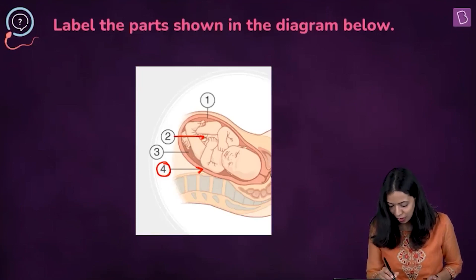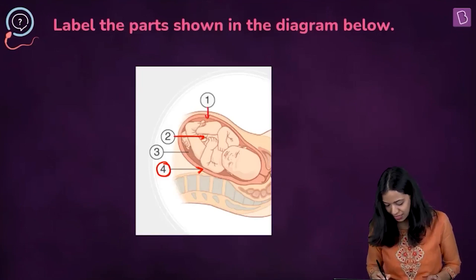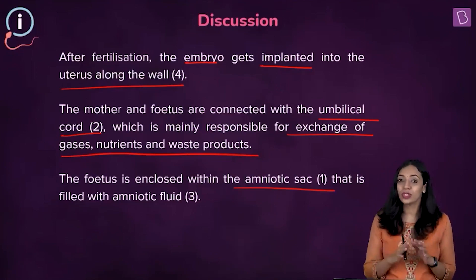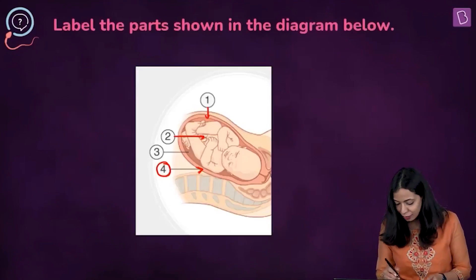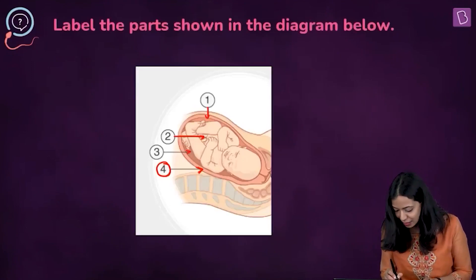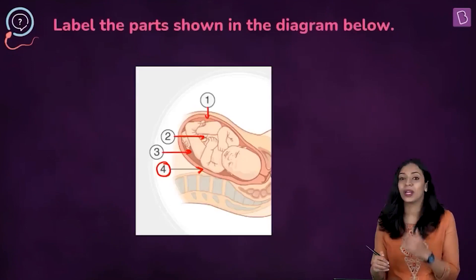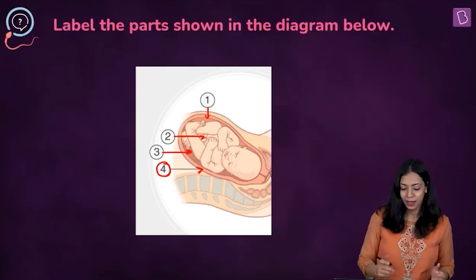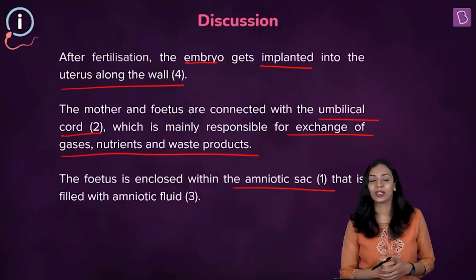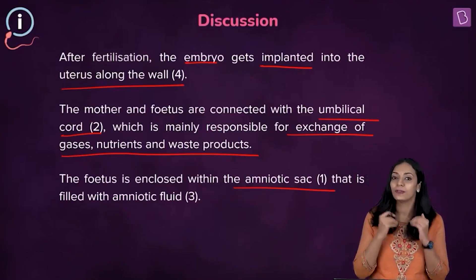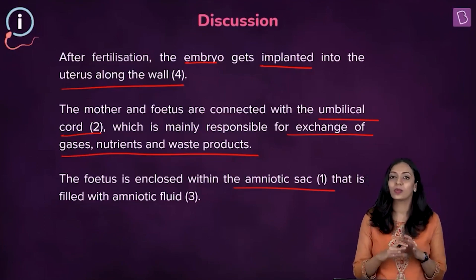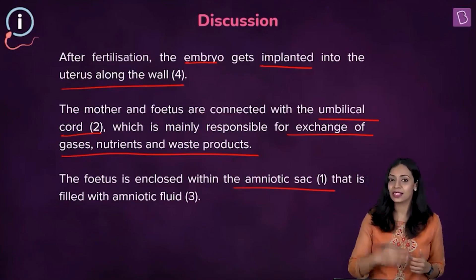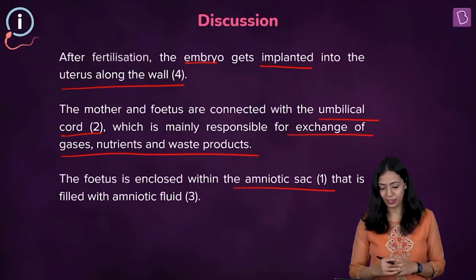Label one represents the amniotic sac. It is a sac within which a fluid is found, and that fluid is labeled as three — the amniotic fluid. The amniotic fluid acts like a shock absorber and protects the fetus.